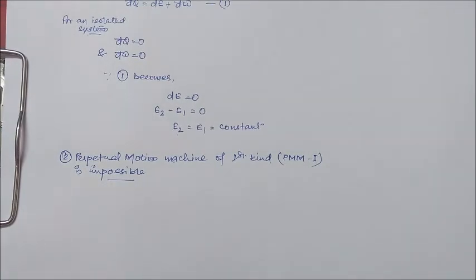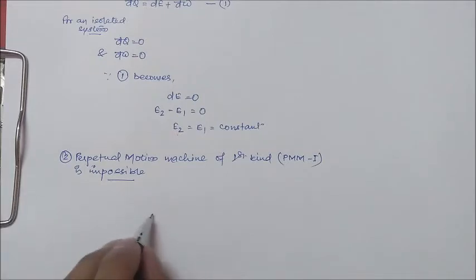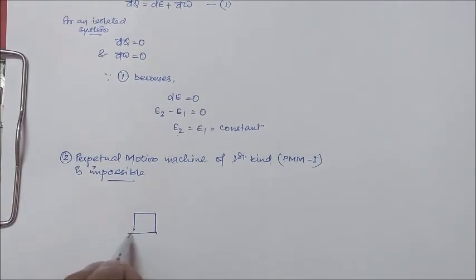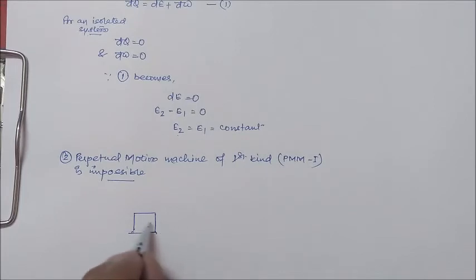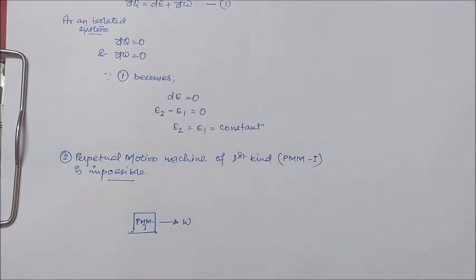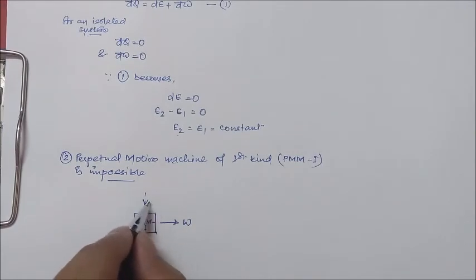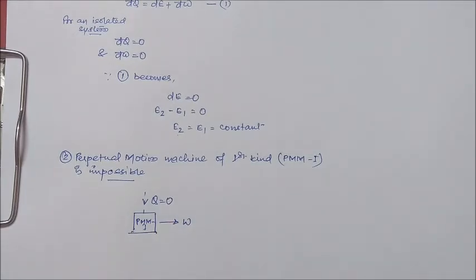What is perpetual motion machine of first kind? It is that type of machine which will produce work continuously without absorbing any kind of heat or any other kind of energy.